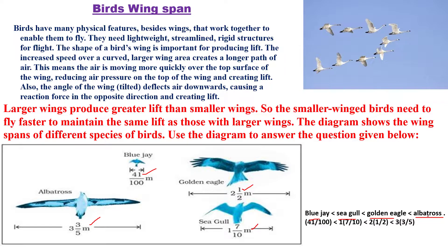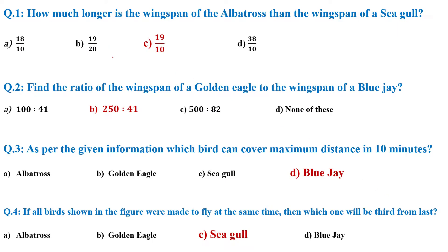Question: How much longer is the wingspan of the albatross than the wingspan of the seagull? Simply subtract the two distances and the answer will be 19/10.